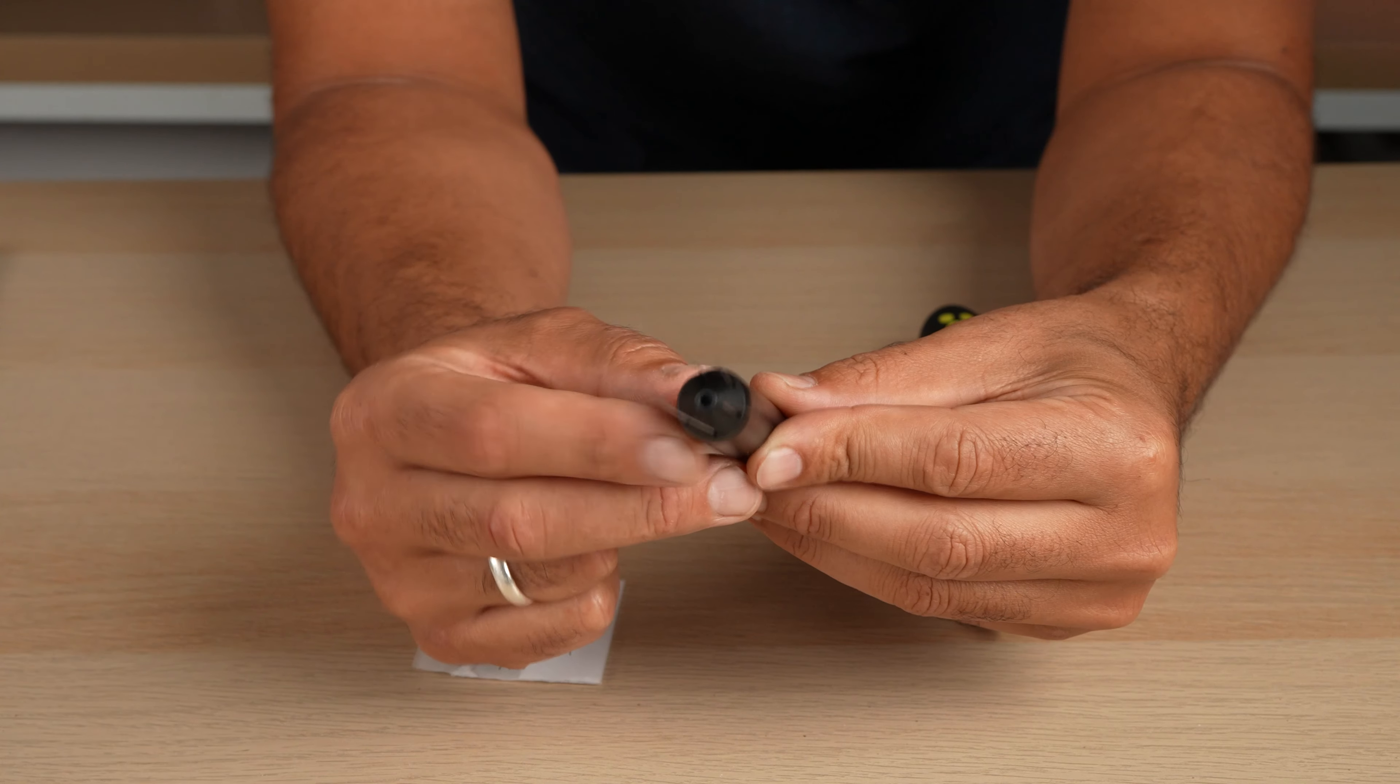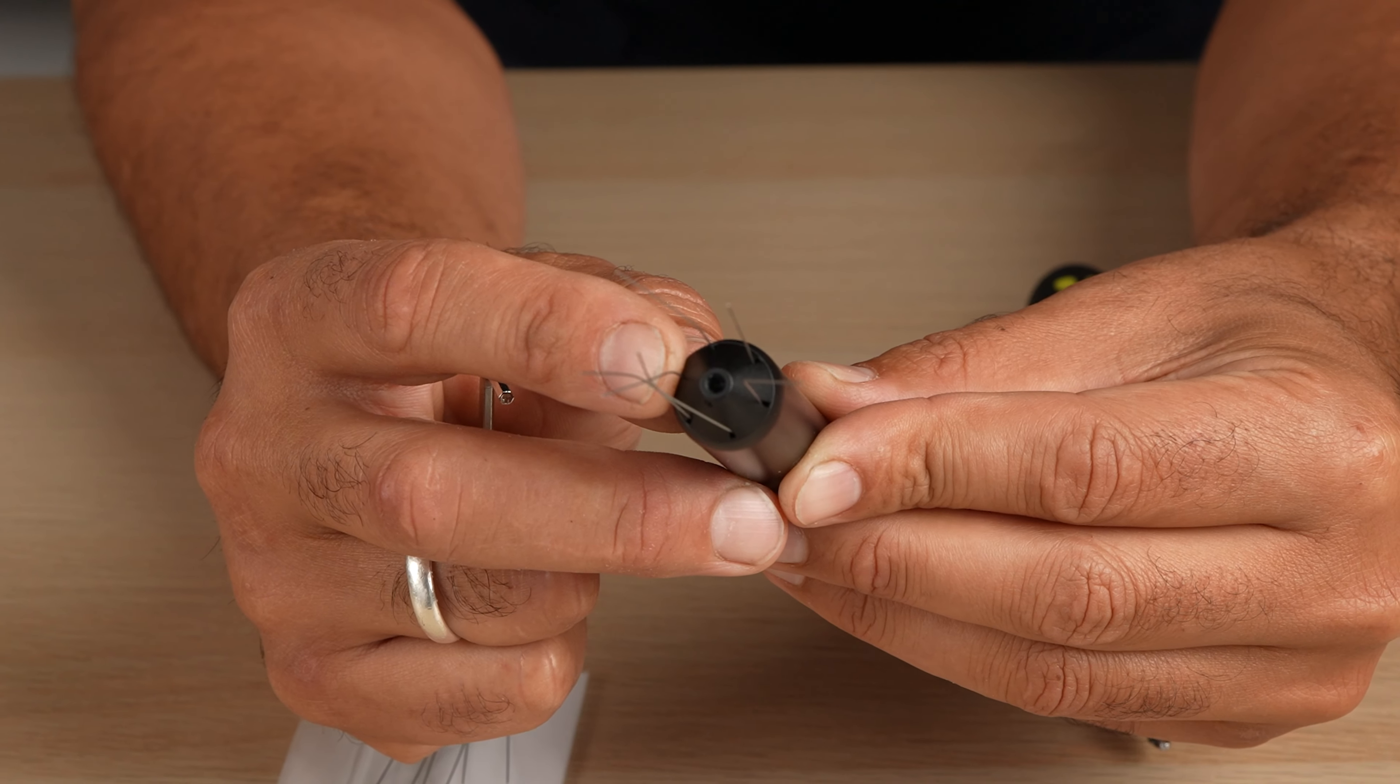You're going to need the Flick, spare needles, the Allen key which is included and a screwdriver. Now let's get started.